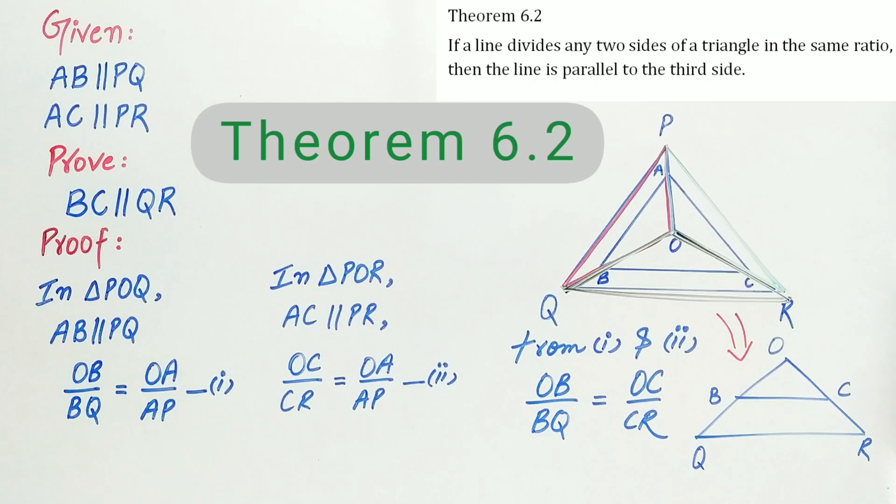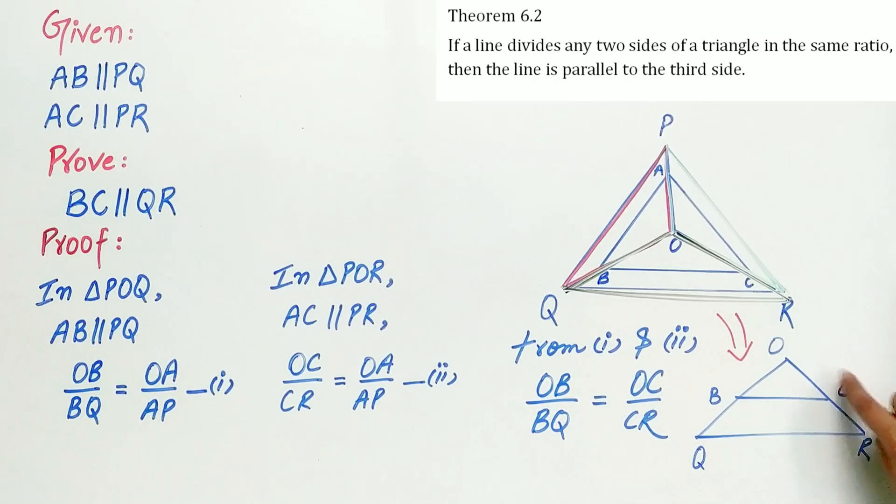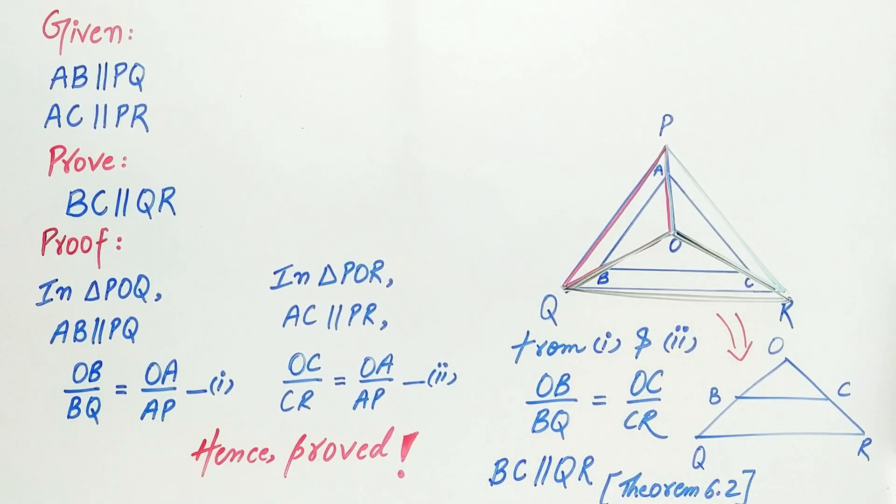Then by Theorem 6.2, if a line divides two sides of a triangle in the same ratio, then the line is parallel to the third side. That is, BC is parallel to QR by Theorem 6.2. Hence proved.